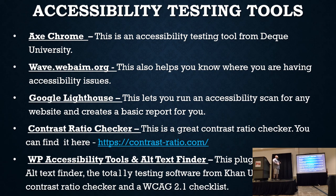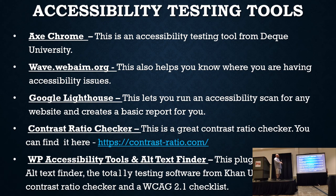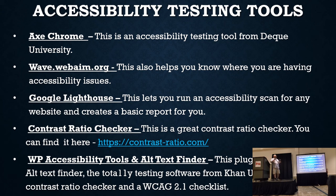We've got a contrast ratio checker — contrastratio.com. Very easy. WordPress accessibility tools — this is our plugin. We put a lot of cool stuff in there, but it's on the repository. You get it, you download it. It's got a bunch of great features, and I ask for nothing.